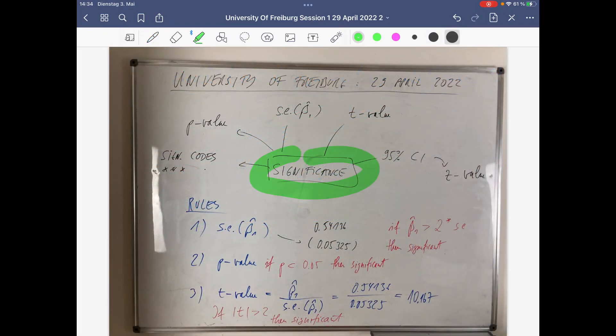So what about significance? We have several measures to see that: significance codes, p-value, estimated standard errors, t-value, 95% confidence interval, which includes z-values.